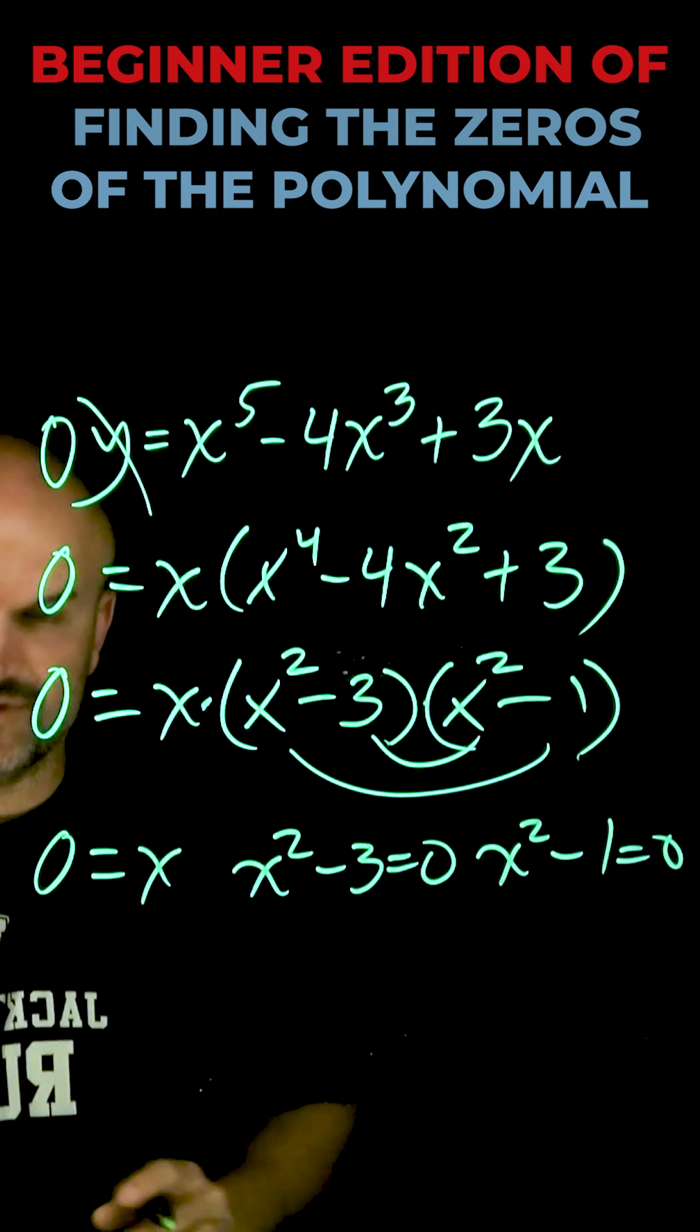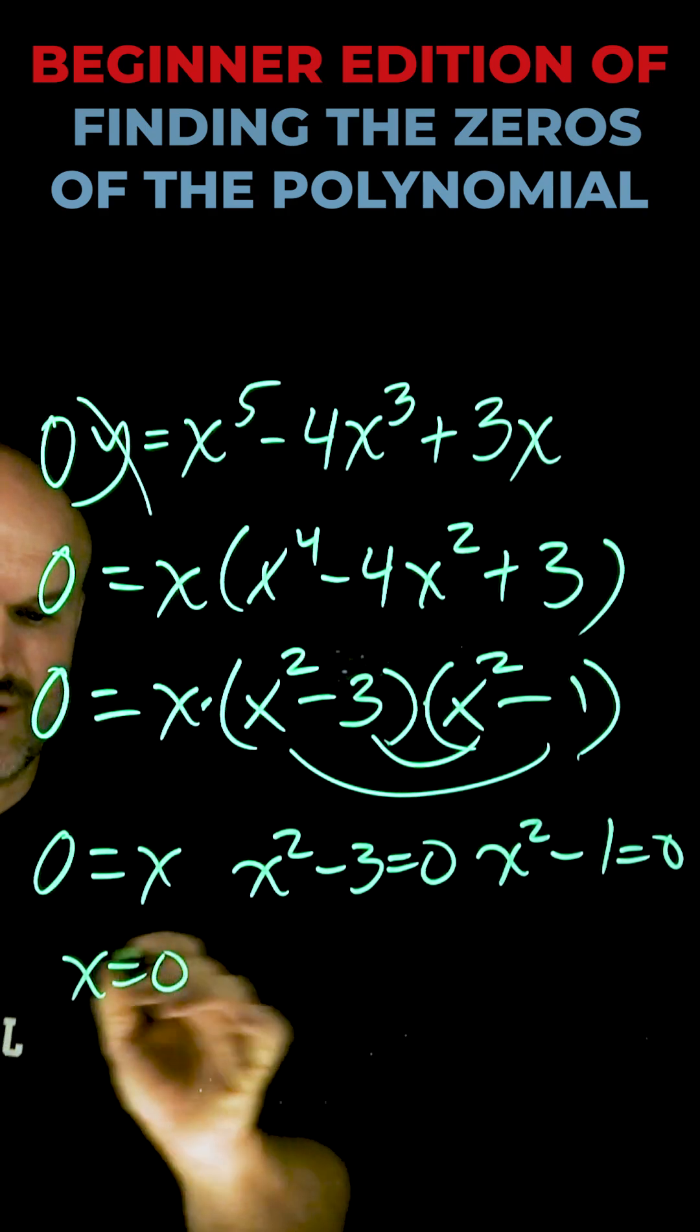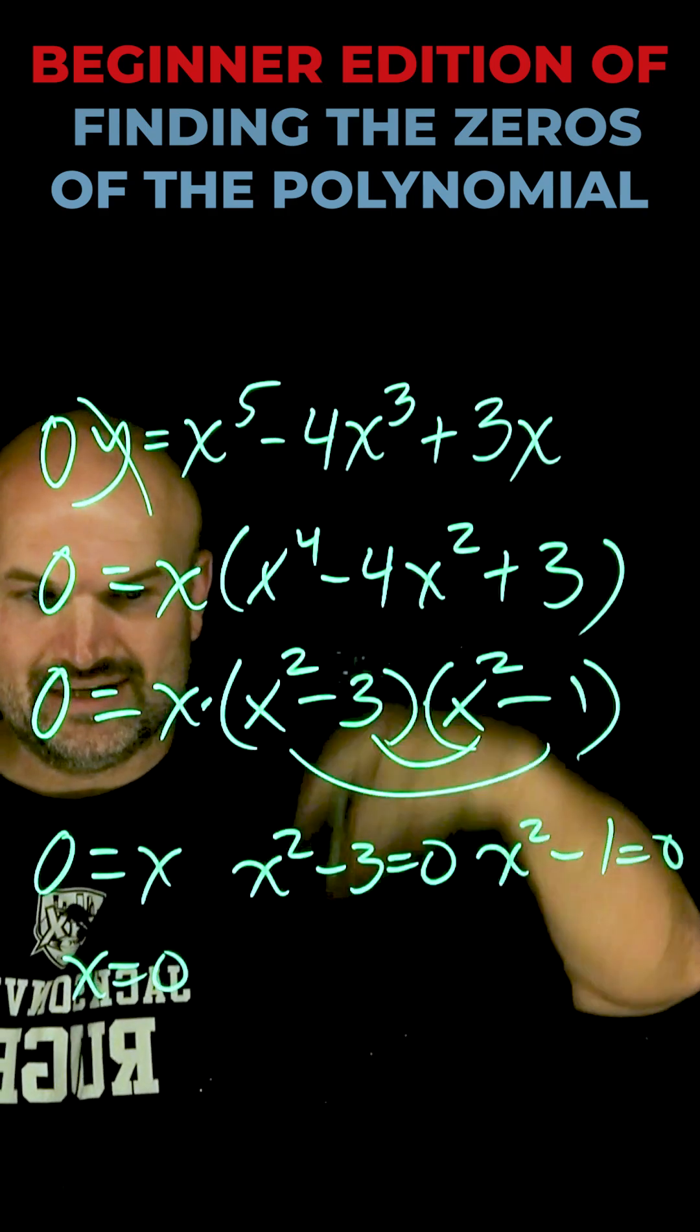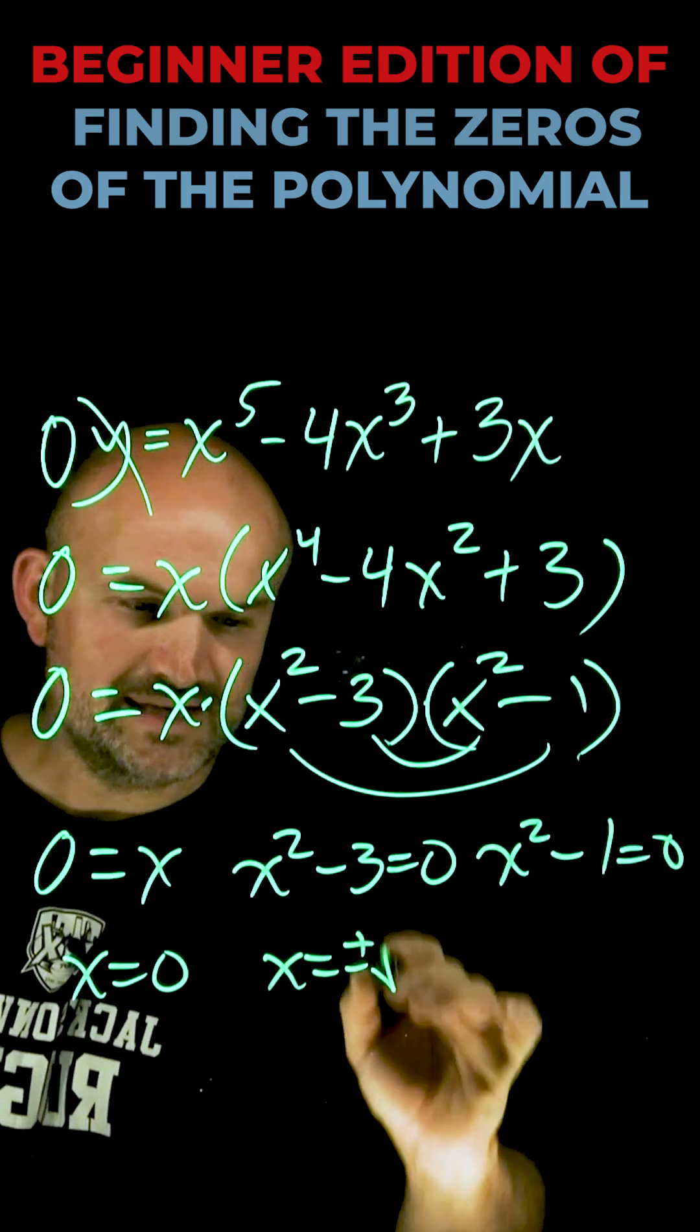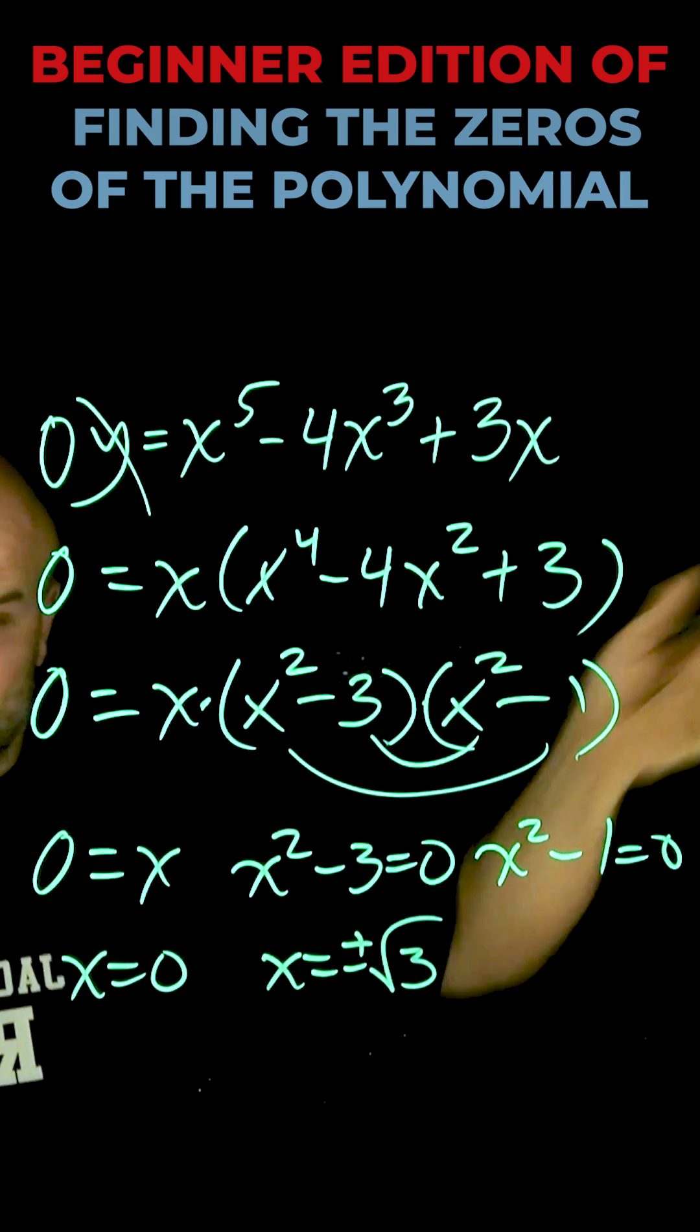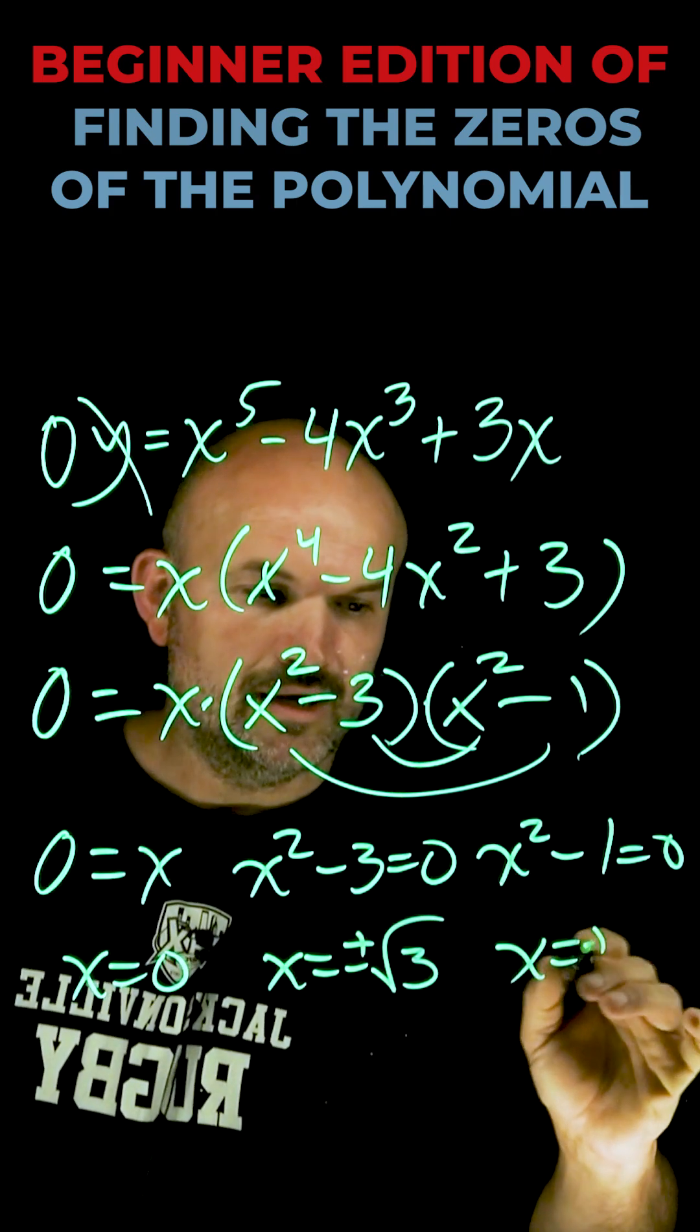So by taking each factor and setting it equal to zero, I can now go and solve. So I have x equals 0, add 3 and take the square root, include plus or minus. So x equals plus or minus the square root of 3. Add 1, take the square root, x is going to equal plus or minus 1.